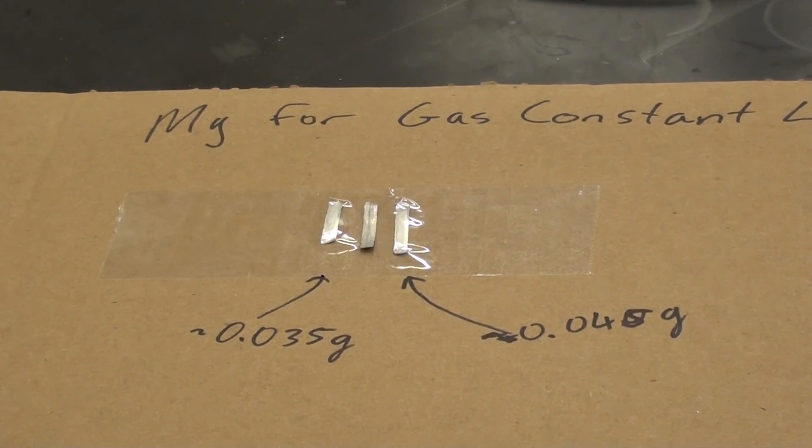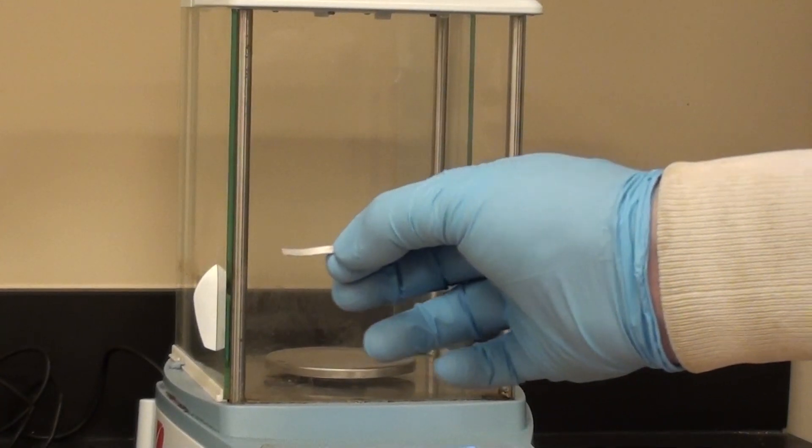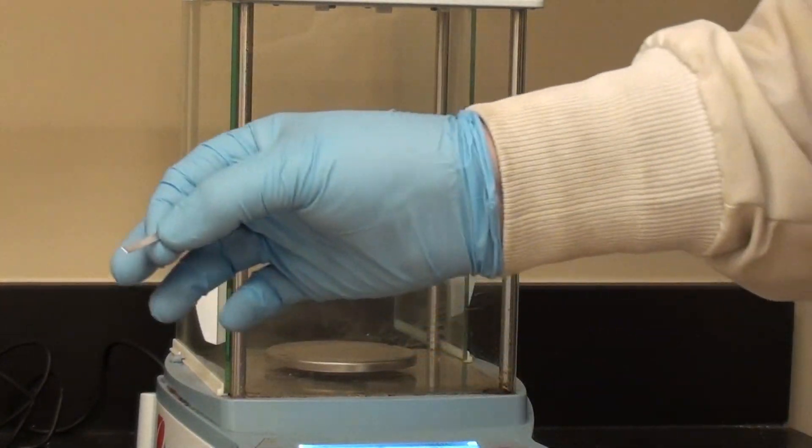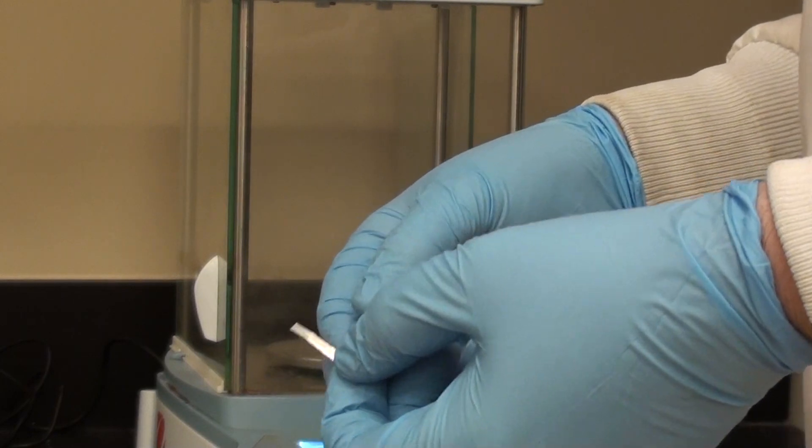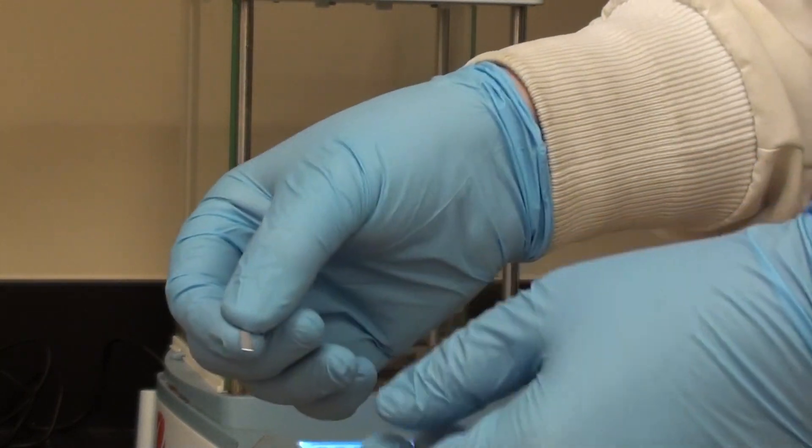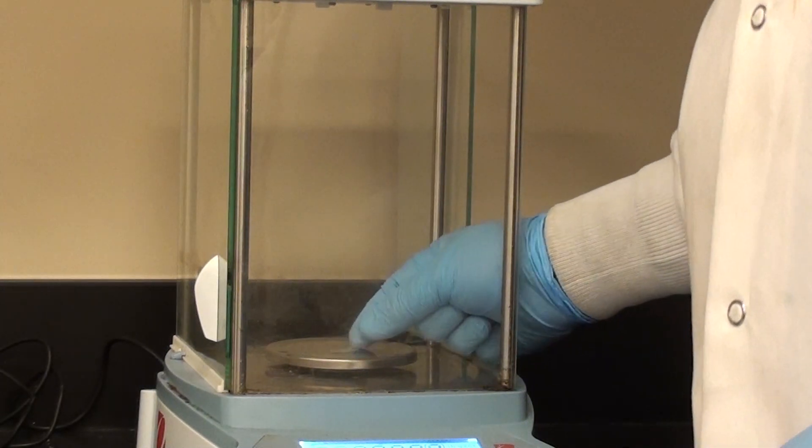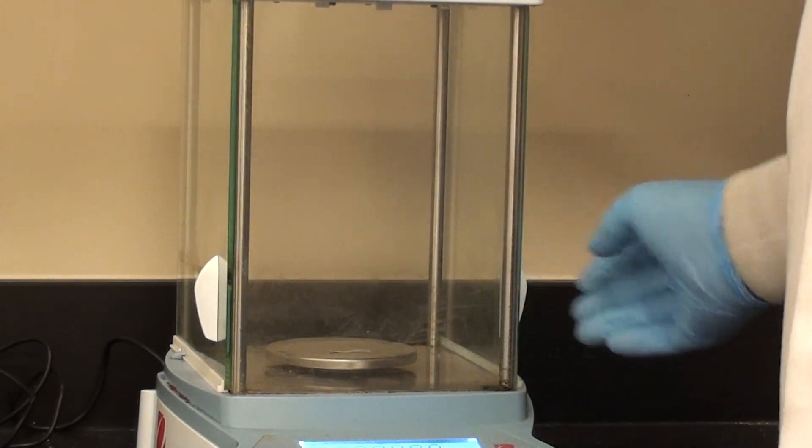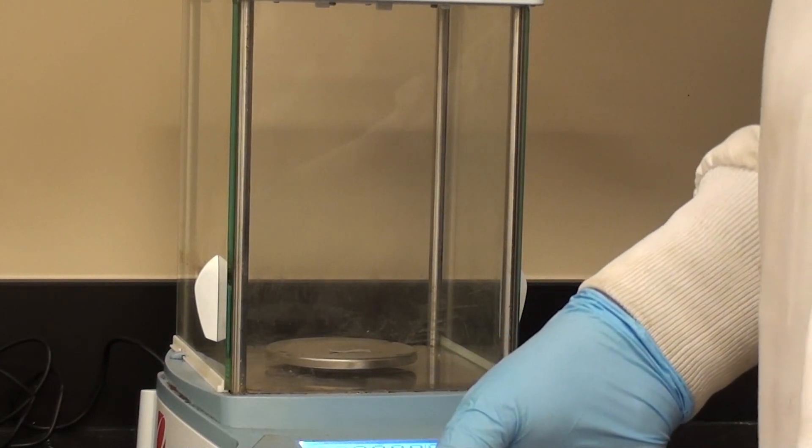So now we're going to take that and we're going to weigh it. Here's my cut piece of magnesium. It says in the directions it's probably a good idea to sand it as well before you weigh it. Then after you've sanded it you can put it on the balance and just note the mass. It should be somewhere between 0.035 grams and 0.045 grams.